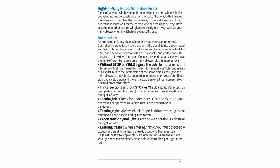Turning left: check for pedestrians and give the right-of-way to any pedestrian or approaching vehicle that is close enough to be dangerous. Turning right: always check for pedestrians crossing the street and motorcycles and bicycles riding next to you. Green traffic signal light: proceed with caution — pedestrians have the right-of-way. Entering traffic: you must proceed with caution and yield to traffic already occupying the lanes. It is against the law to stop or block an intersection where there is not enough space to completely cross before the traffic signal turns red.